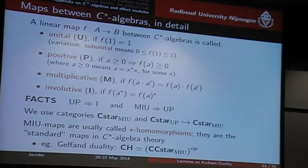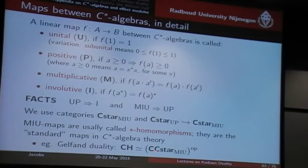These are the kind of morphisms that people have really studied. For instance, in Gelfand duality, compact Hausdorff spaces are equivalent to commutative C*-algebras with these star-homomorphisms. But an interesting question is: what if you replace MIU with UP?